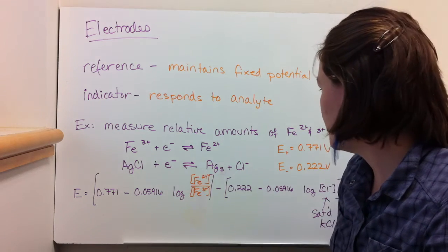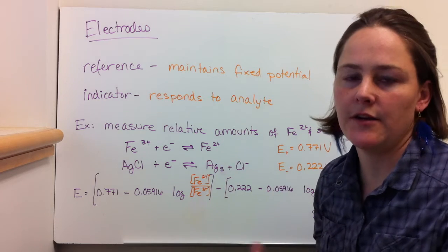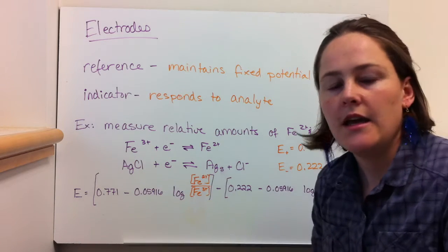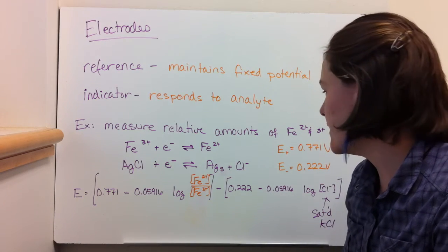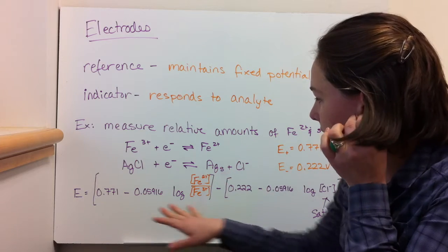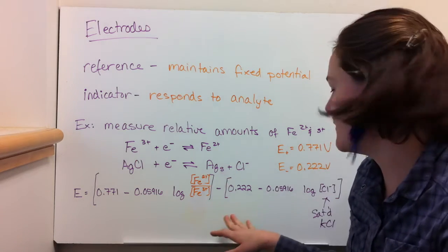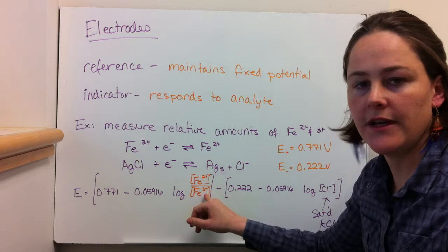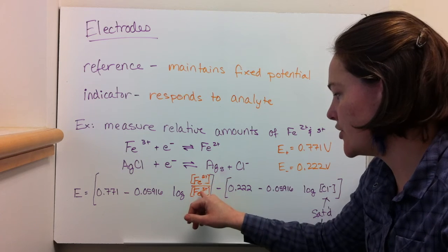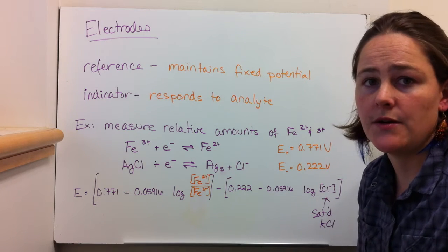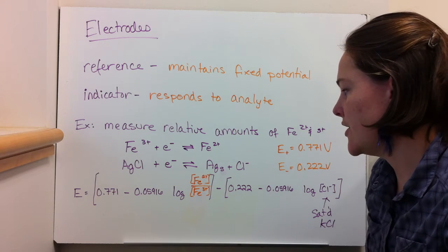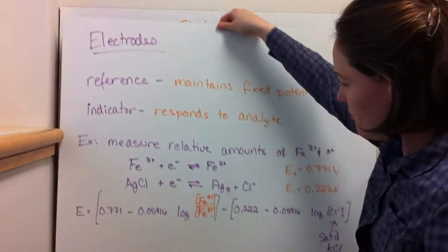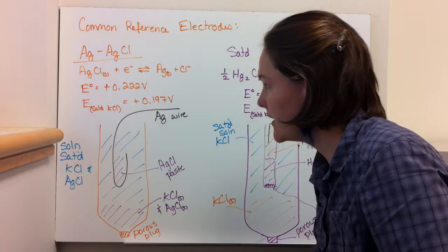Here's an example. We're going to measure the relative amounts of Fe2+ and Fe3+ in solution. You're going to measure it against an AgCl electrode. You can do the math, so you have E positive minus E minus using the Nernst equation. And what you end up with is that everything is constant except for the concentration of Fe2+ and Fe3+ in solution. So you can actually measure the different concentrations of Fe2+ and Fe3+ in solution based on the potential that you measure.